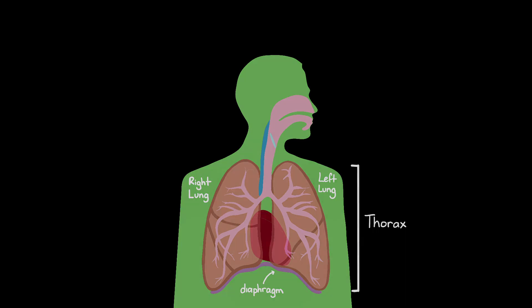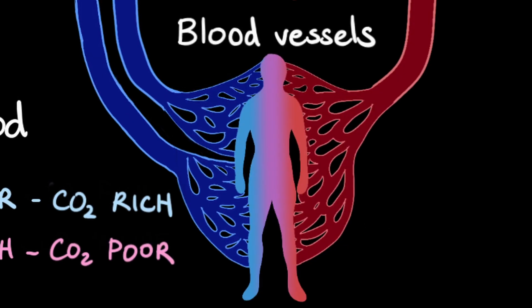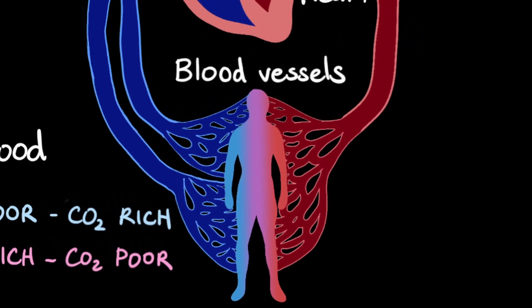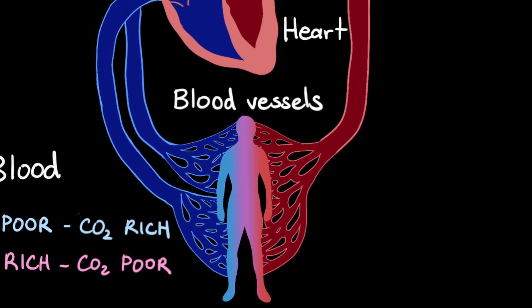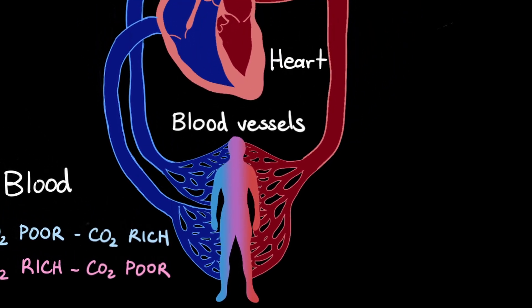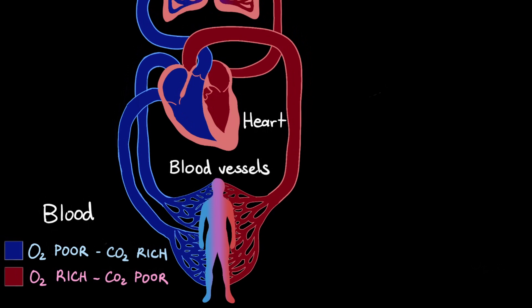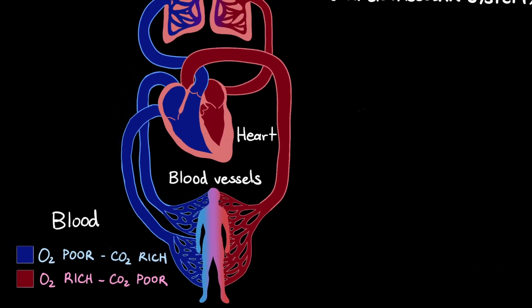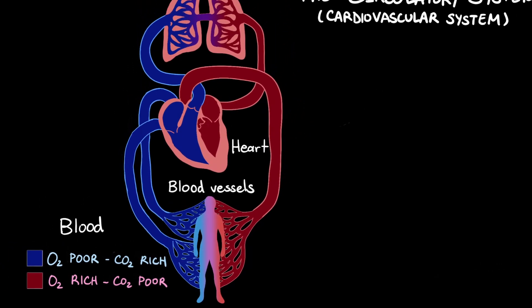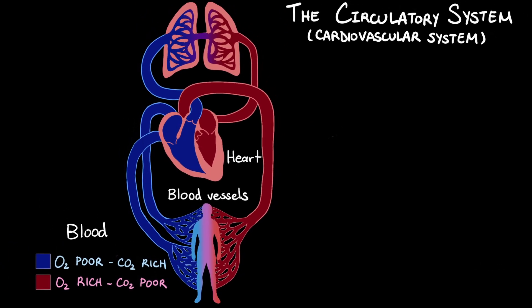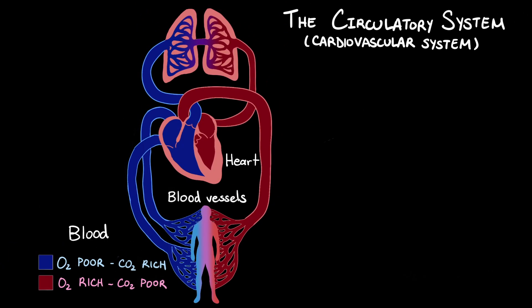Blood vessels, on the other hand, are found throughout your entire body, from head to toe, and can branch into teeny tiny vessels that are so small that they only allow one single blood cell to pass through at a time.